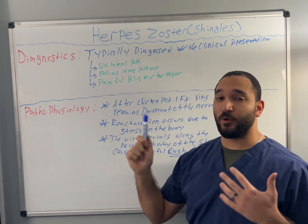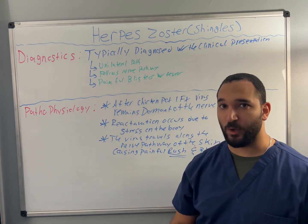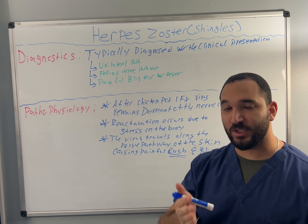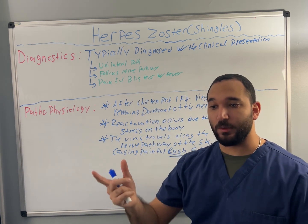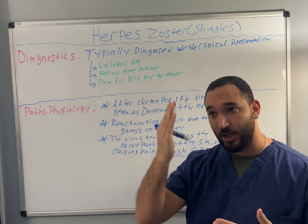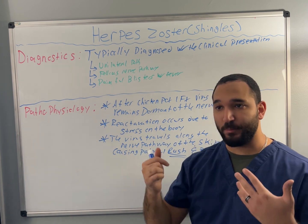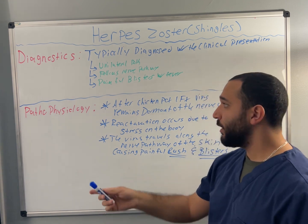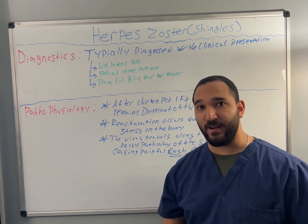For the diagnosis of herpes zoster, it is typically diagnosed by clinical impression. Usually when the patient presents at the clinic or ER, they present with a unilateral rash that is extremely painful. Shingles follows a nerve pathway in a strip along one side of the body and is typically presented with painful blisters and a fever. It is usually diagnosed upon impression, since other skin conditions are generally not as painful to the touch.